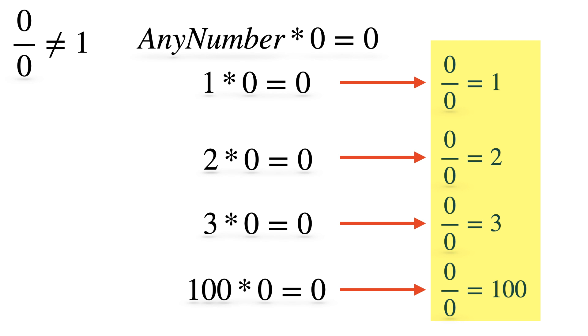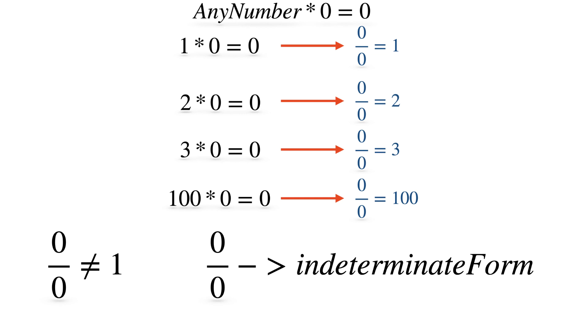So, it is difficult to say what is the exact value of 0 by 0 since there is no unique answer. Henceforth, we call 0 by 0 an indeterminate form. From the above examples, 0 by 0 is not equal to 1, but an indeterminate form.